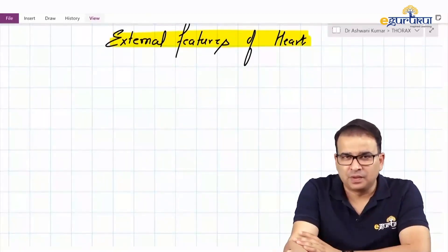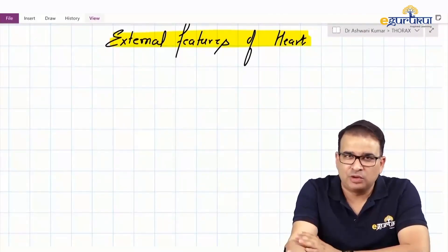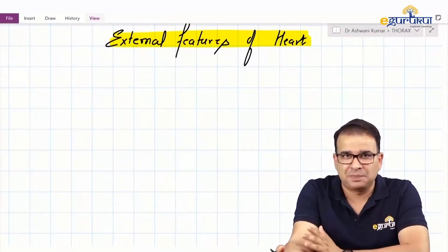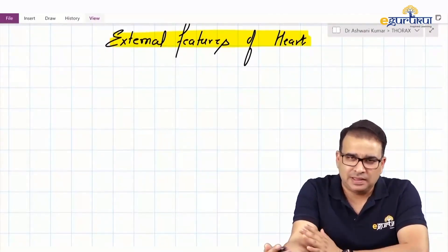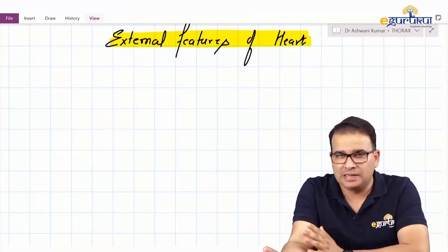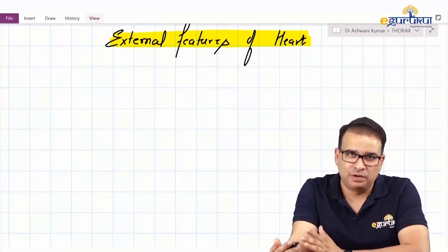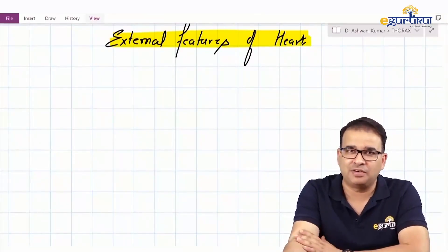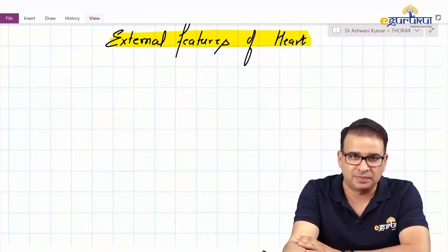External features of the heart. In this section we will talk about the major surfaces, borders, the base and the apex of the heart. Then in the next part we will move on to the interior of the heart, talking mainly about the interior of the right atrium and right ventricle.